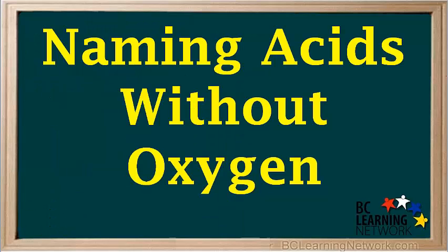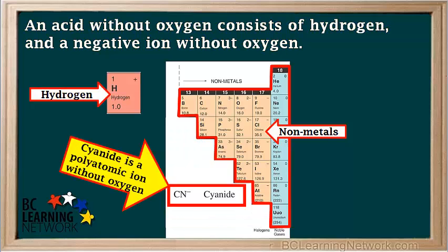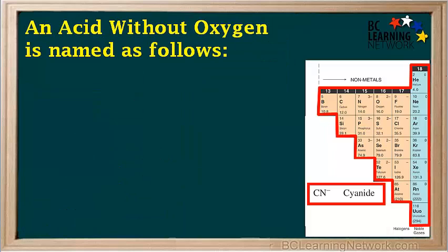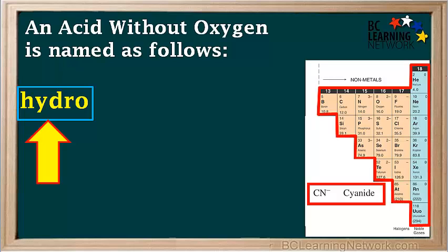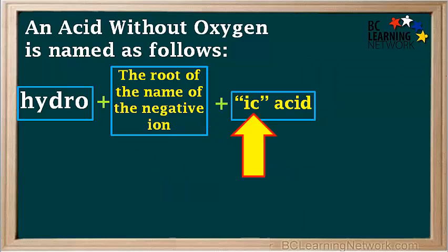We'll start with the system for naming acids without oxygen. An acid without oxygen is made up of hydrogen and a negative ion without oxygen. Most negative ions without oxygen are ions of the non-metals on the right side of the staircase on the periodic table, but there are also polyatomic ions without oxygen — one example is the cyanide ion with the formula CN⁻. An acid without oxygen is named by writing the prefix hydro, then the root of the name of the negative ion, and lastly adding the suffix -ic followed by the word acid.